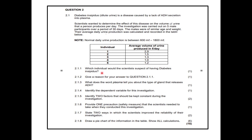Question 2.1.1: Which individual would the scientists suspect of having diabetes insipidus? 600 to 1,800 is normal daily urine production. Which individual produces a lot of urine? It's caused by lack of ADH — lack of ADH means water won't be reabsorbed in your body and a lot of urine will be lost. So it's individual one. Give a reason: the average volume of urine produced by individual one is much more compared to the other participants — he has the highest volume of urine produced per day. It's only one mark, so there's no need to elaborate.